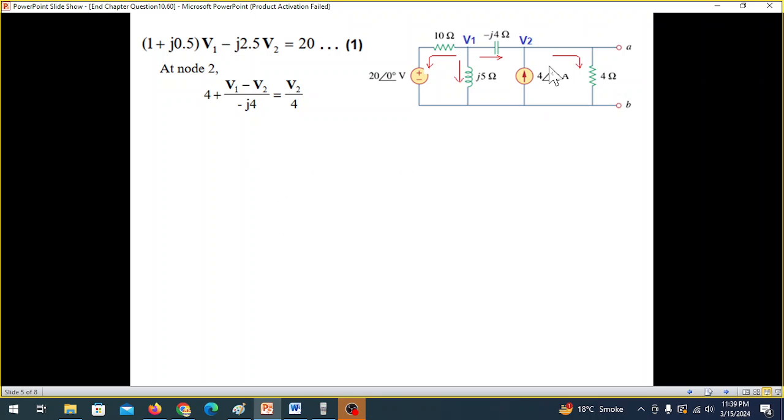And now at node 2. At node 2, this is entering, this is entering, and this one leaving. So 4 ampere entering. V1 minus V2 divided by minus J4 entering. And V2 divided by 4 is leaving. Again, multiply by the LCM minus J4. This becomes like this. Simplifying, we get equation number 2.